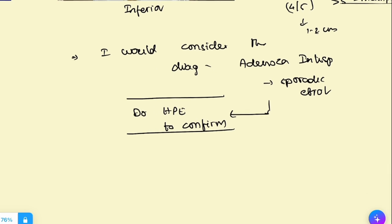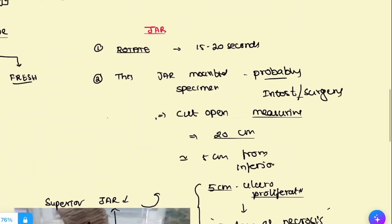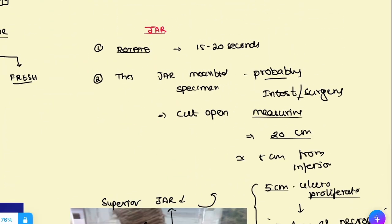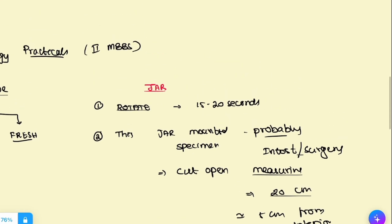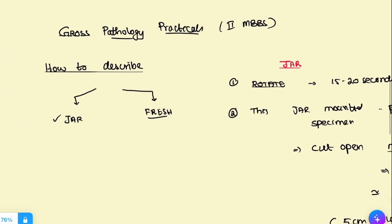So this is just a template to make sure the examiner sees that you can talk about a specimen for one to two minutes. If you can hold the conversation in a viva for one minute, you win. To summarize: rotate the jar 15-20 seconds; state 'this is a jar-mounted specimen of probably intestine'; if good in anatomy, give identification points; state it's cut open measuring so and so; describe the ulceroproliferative lesion with necrosis; comment on surrounding mucosa and polyps; conclude with diagnosis of adenocarcinoma and request histopathological examination for confirmation. This is the gross description series — I'll put across multiple specimens. See you soon. Bye from Dr. Angit.